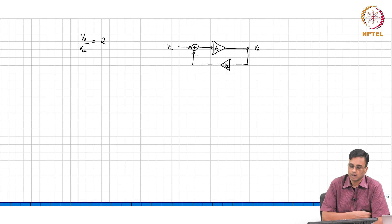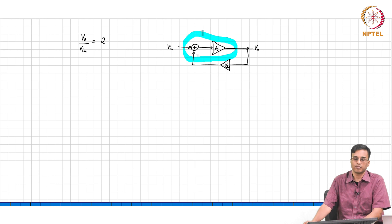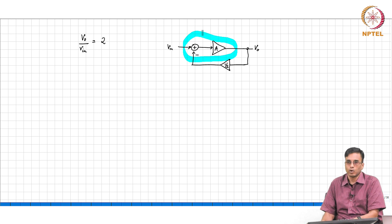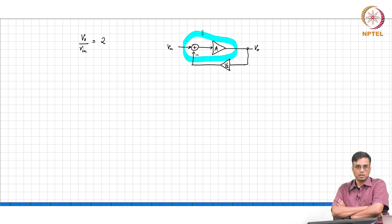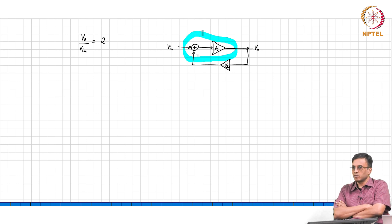Now, if somebody wants a gain of say 5, what will you do? Assuming that A is very, very large, then if you want to get a different gain, the only thing that needs to be changed is the feedback factor — we change it from 1/2 to 1/5.